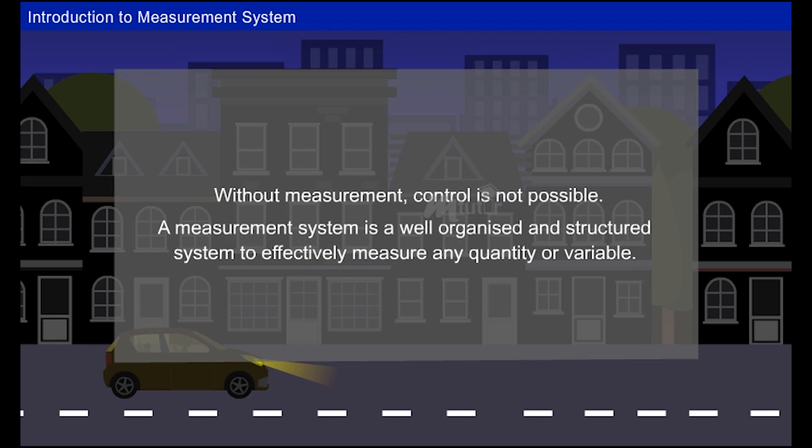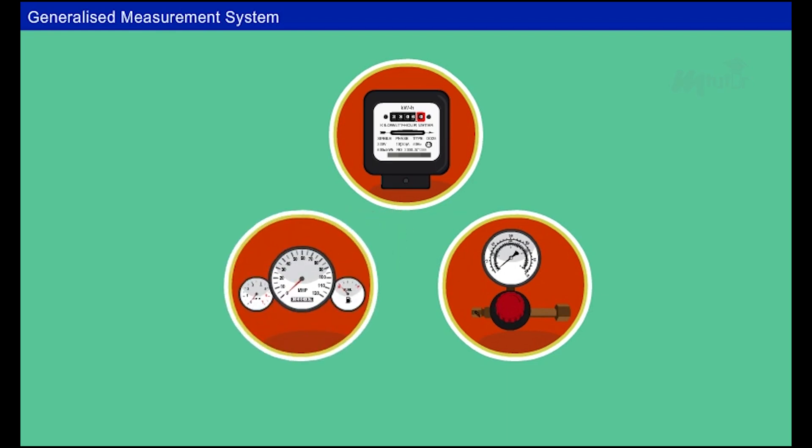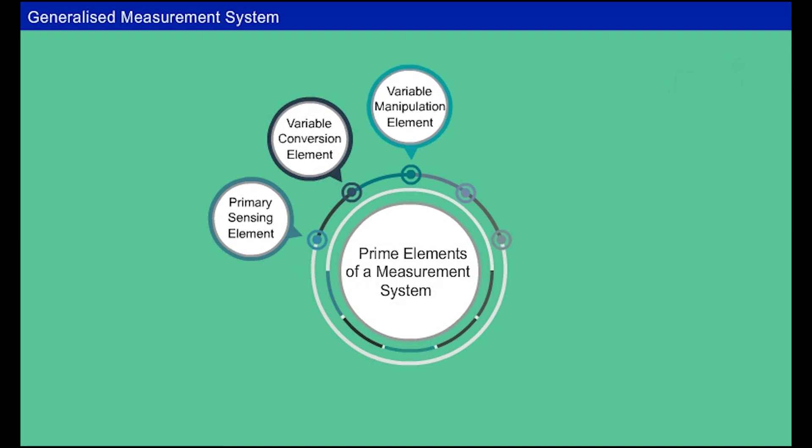For an effective measurement of any quantity or variable, we need a well-organized and structured system. Such a system is known as a measurement system. Let us explore how the general measurement system is operated. An instrument or device used for measurement has a structured system. The prime elements of a measurement system are: primary sensing element, variable conversion element, variable manipulation element, data transmission element, and data presentation element.